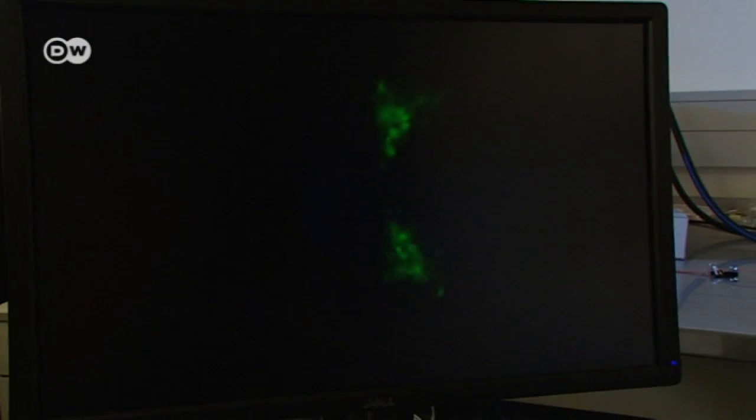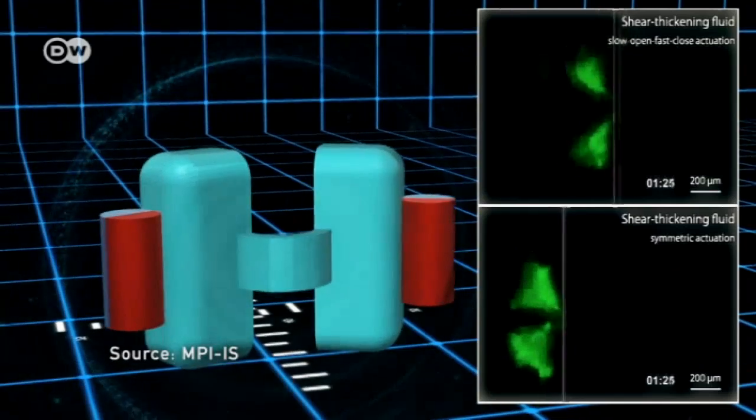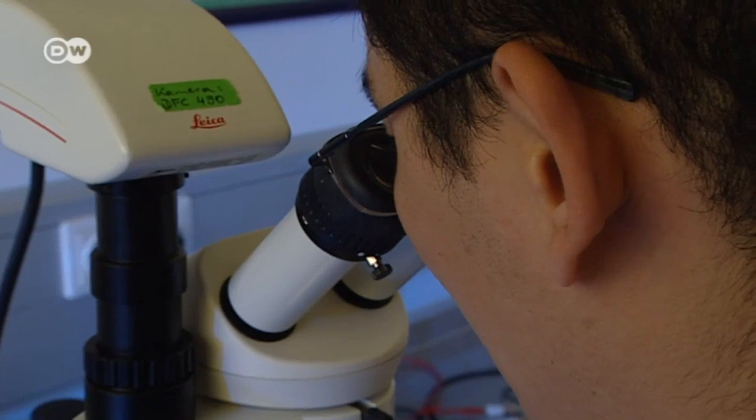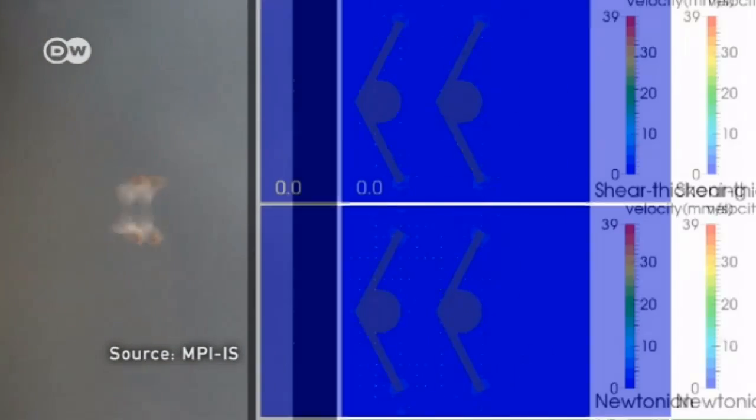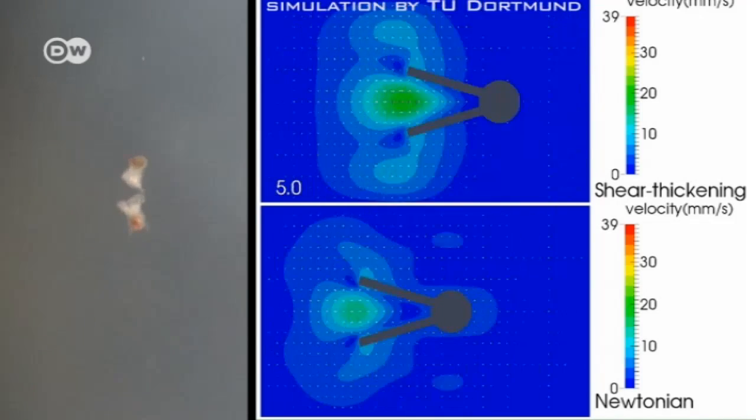This micro-scallop moves forward using simple rowing movements. The speed of the scallop varies depending on the viscosity of the bodily fluid. The thinner the fluid, the lower the resistance and the faster the movement. The micro-swimmers progress more swiftly in the fluid when they open slowly and close quickly.